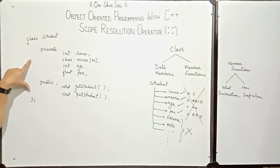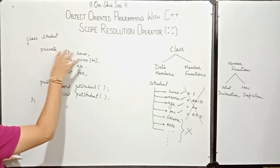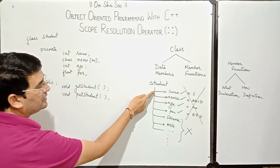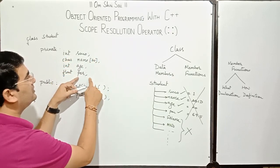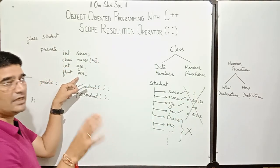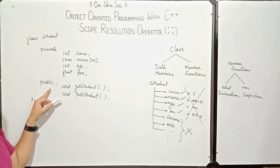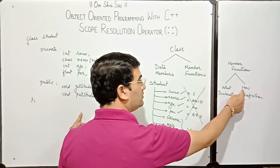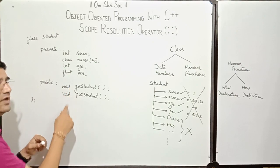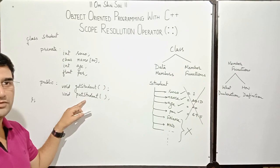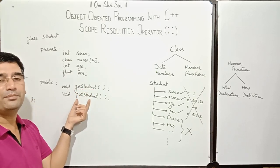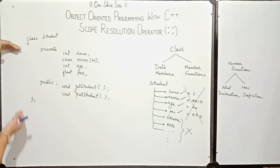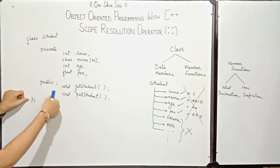As this class uses the concept of abstraction, it is also known as an abstract data type. In this student class, we have implemented abstraction for both the data members and the member functions. Now, somewhere we have to specify how it is to be done — how get student will get the information and put student will print the information. As we have closed the class definition, there is no place remaining to define these functions inside the class. The only remaining place is outside the class.